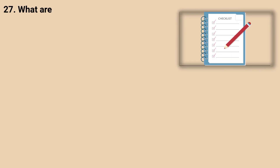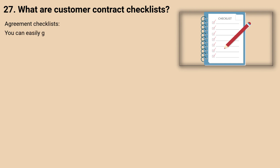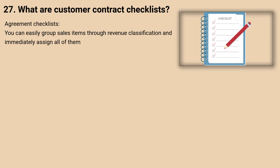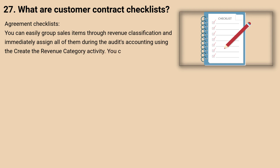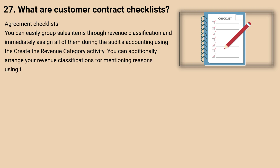27. What are customer contract checklists? You can easily group sales items by revenue classification and immediately assign them during the accounting process using the Create Revenue Category Activity. You can additionally arrange your revenue classifications for reporting purposes using the Create Revenue Category Hierarchy Activity.